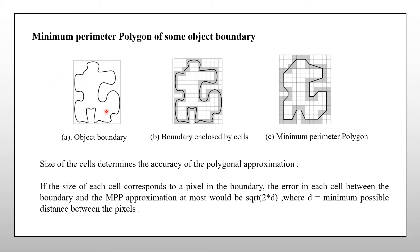Enclose a boundary by a set of concatenated cells. First of all, introduce a grid into this object boundary and join each and every cell which includes a boundary in it. By joining this, we can get the cellular complex.